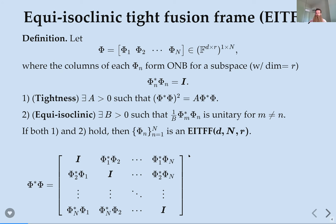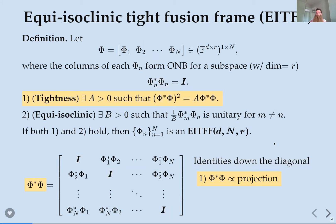In terms of the block Gram matrix: it has identities down the diagonal (saying those sub-matrices are isometries), the whole matrix is proportional to a projection (tightness), and each off-diagonal block is proportional to a unitary — not the same unitary, but all with the same proportionality constant.